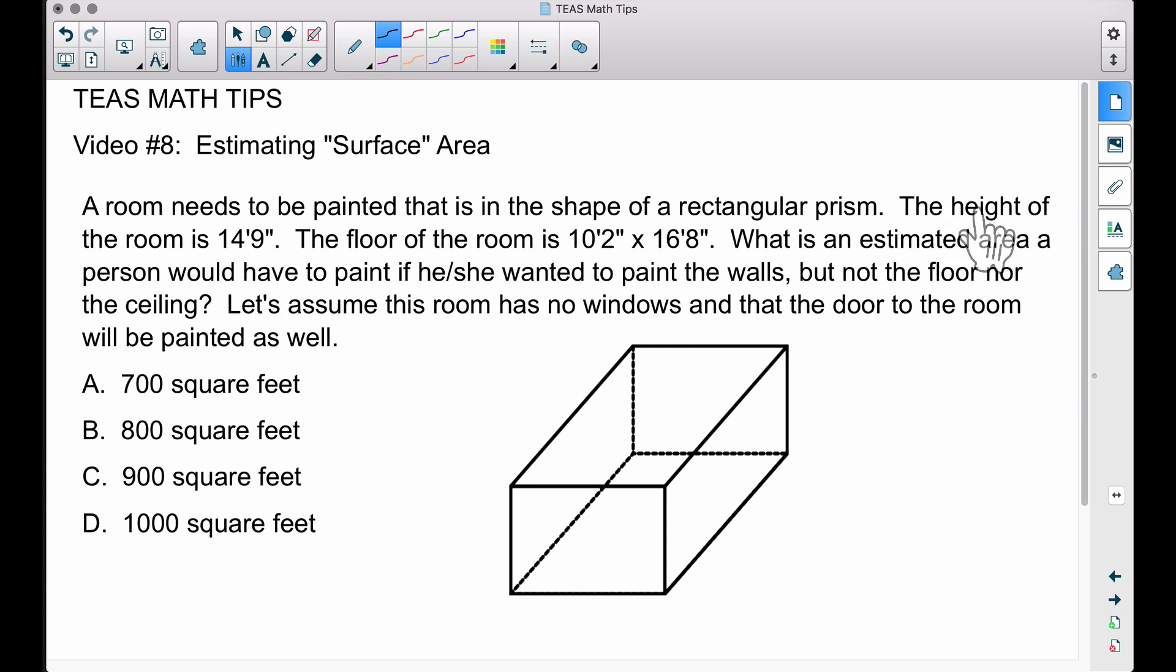For example, 14 feet 9 inches is closer to 15 feet than 14 feet. This is the height of our room, so I'm going to put 15 feet. The floor is 10 feet 2 inches by 16 feet 8 inches. 10 feet 2 inches is closer to 10 feet than 11 feet, so I'll put 10 feet. 16 feet 8 inches is closer to 17 feet than 16 feet, so I'm going to put 17 feet for this other dimension.